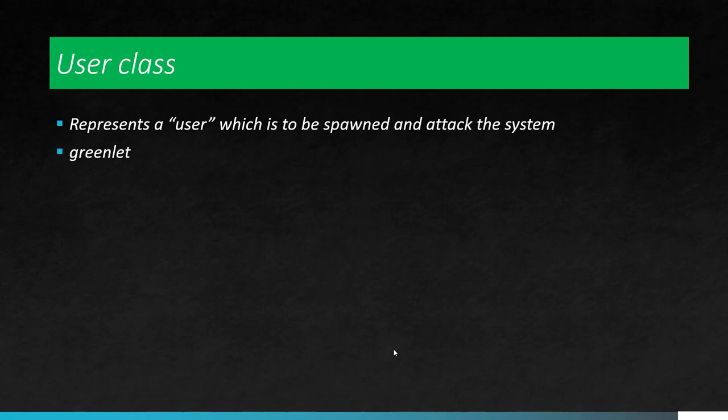The user class is nothing but a simple user which you will be creating to attack the system. Basically, in JMeter, we create a thread. But here we don't create a thread — we create a greenlet. Basically, it's a micro thread which will help you to do certain tasks.